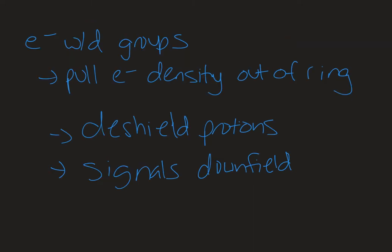The other type of group, generically speaking, that can be attached to a ring is an electron withdrawing group. An electron withdrawing group is going to pull electron density out of the ring. It's going to deshield the protons because there's less electron density around them, and so the signals are going to show up further downfield. That again can be done via resonance or induction.